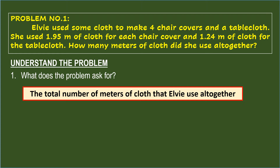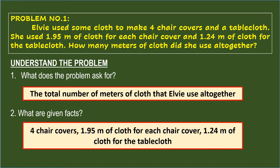The second question under understanding the problem is: What are the given facts? To answer this, you need to look for the given numbers mentioned in the problem. These are: four chair covers, 1.95 meters of cloth for each chair cover, and 1.24 meters of cloth for the table cloth.